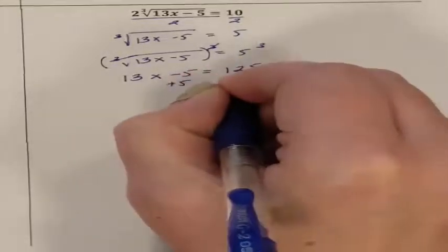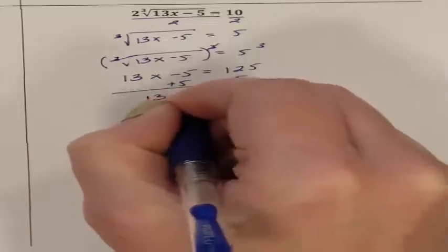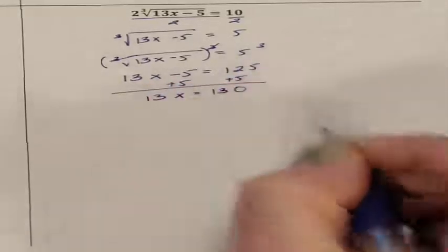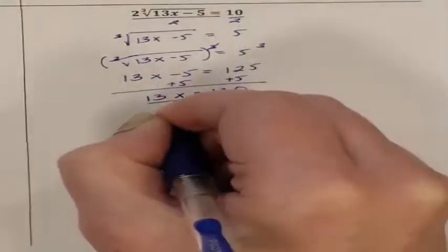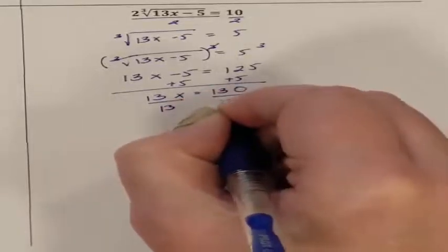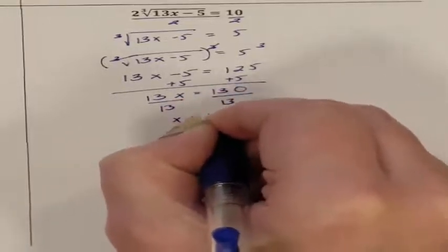I'm going to go ahead and solve for x. So I have 13x equaling 130. Divide both sides by 13. I end up getting x to equal 10.